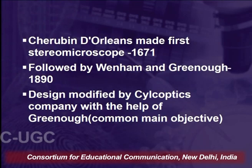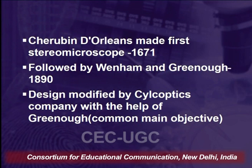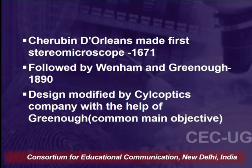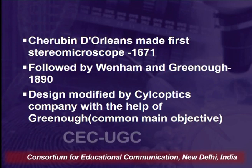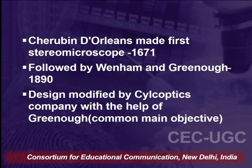We will study the comparison microscope, stereomicroscope, microspectrophotometer, and compound microscope — also known as a simple microscope — and see what kind of evidences can be analyzed under each. The first stereomicroscope was made by Charubundi Orleans in the year 1671, followed by Wenham and Greeneuve, who made certain changes to it. Further, the design was modified by the cycloptics company with the help of Greeneuve, who made a common main objective.